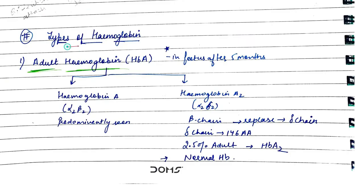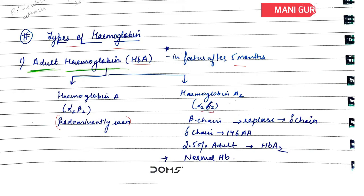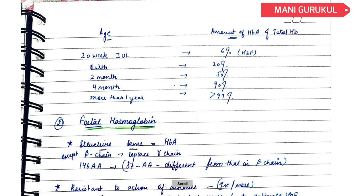Now, what are the types of Hemoglobin? First of all we have Adult Hemoglobin, represented by HbA. In the fetus after 5 months it is seen. It is mainly of two types: Hemoglobin A and Hemoglobin A2. Hemoglobin A has Alpha 2 and Beta 2 chains, which is prominently seen in human beings. In Hemoglobin A2, the Beta chain is replaced by a Delta chain, so it has Alpha 2 and Delta 2 chains. There are 146 amino acids. 2.5% of adults have HbA2, and it is normal — it does not cause any deficiency or diseases.